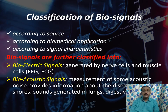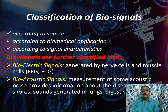Next, we shall see about the classification of biosignals. Bio-signals are classified according to source, according to biomedical application, and according to signal characteristics. Bio-signals are further classified into bioelectric signals, which are generated from nerve cells and muscle cells. Examples of such signals include EEG, ECG, etc.